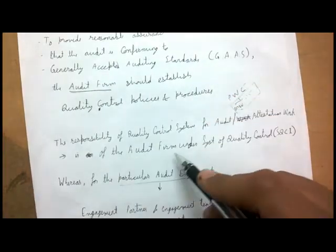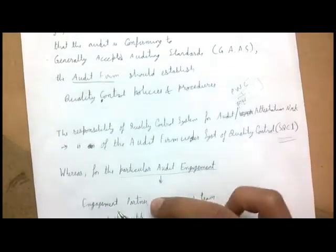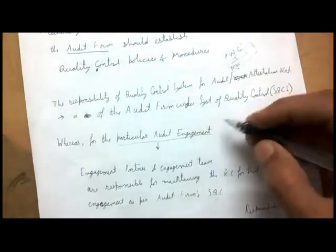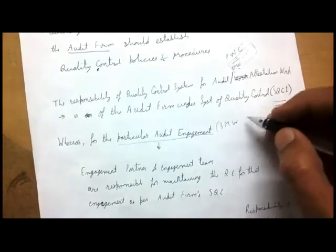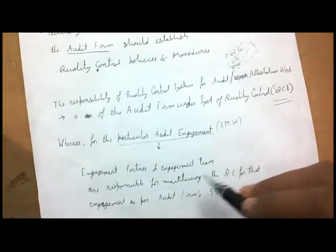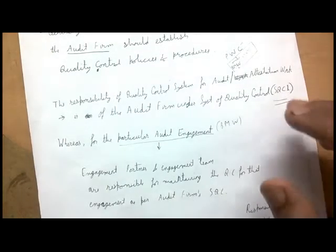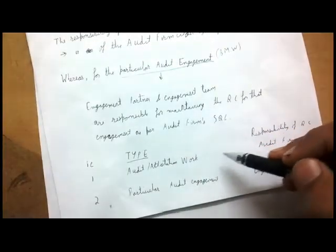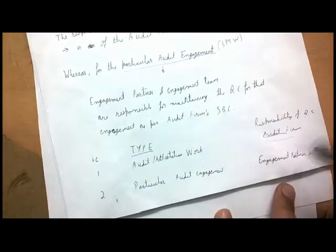The system of quality control for the complete audit is the audit firm's responsibility. For a particular audit engagement, the engagement partner and the engagement team are responsible for maintaining quality control for the engagement as per the audit firm's system of quality control. The engagement partner ensures that quality control policies and procedures are applied for that specific engagement.